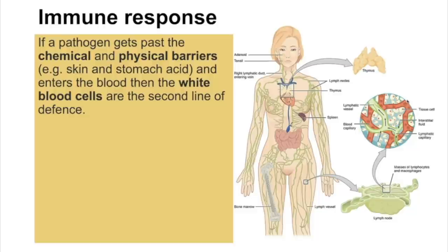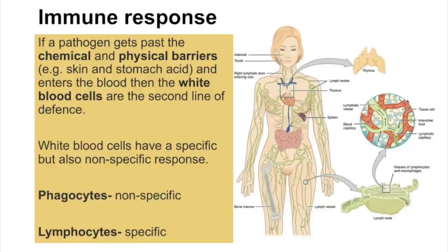Looking at the immune response: if a pathogen gets past the chemical and physical barriers (e.g., skin as a physical barrier, stomach acid as a chemical barrier), white blood cells are the next line of defence. White blood cells have both specific and non-specific responses. Phagocytes provide a non-specific response — they destroy any foreign item they encounter. Lymphocytes have a specific response, which is where antigen detection comes in.